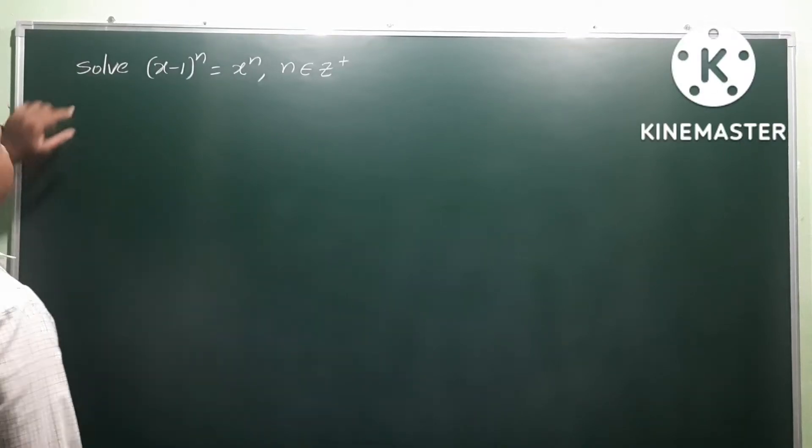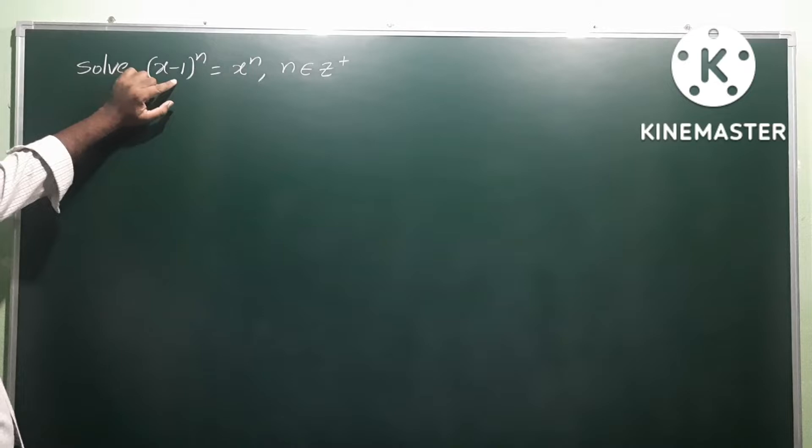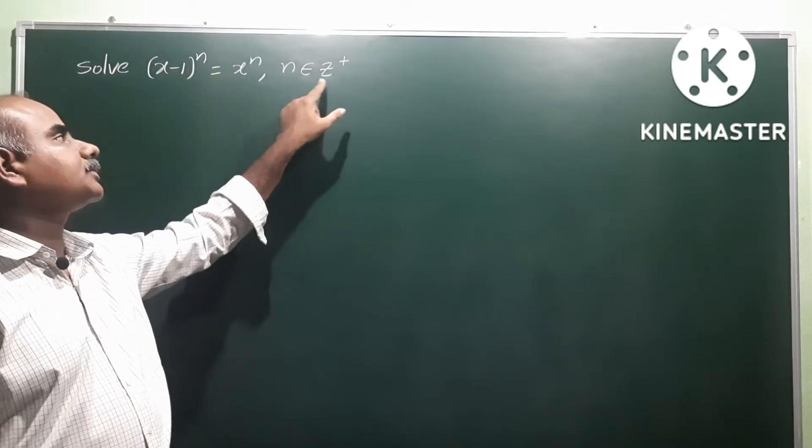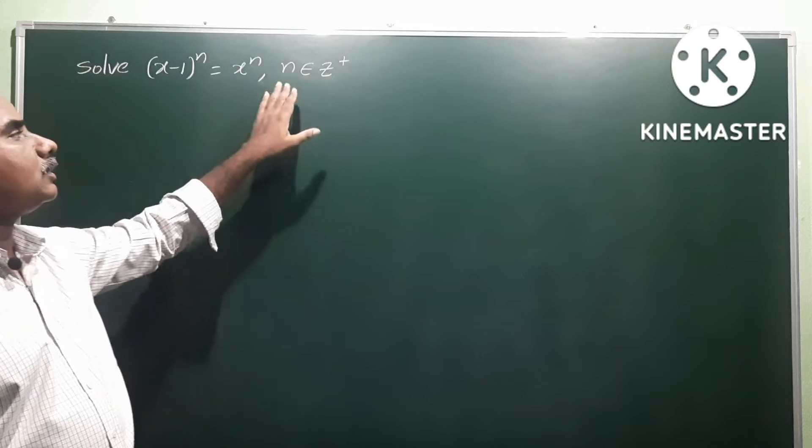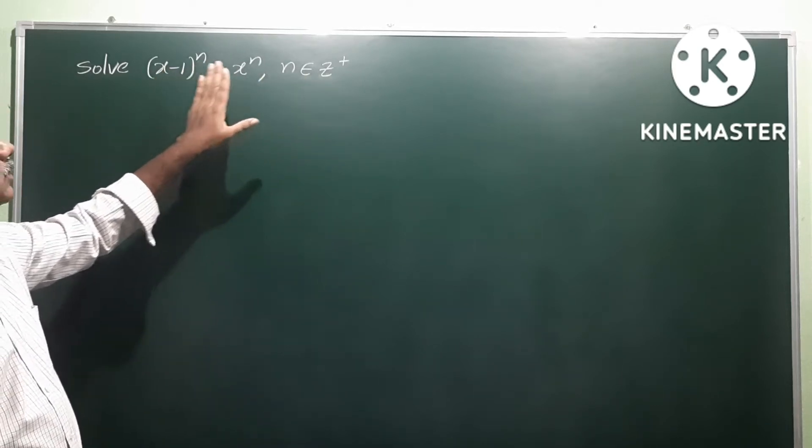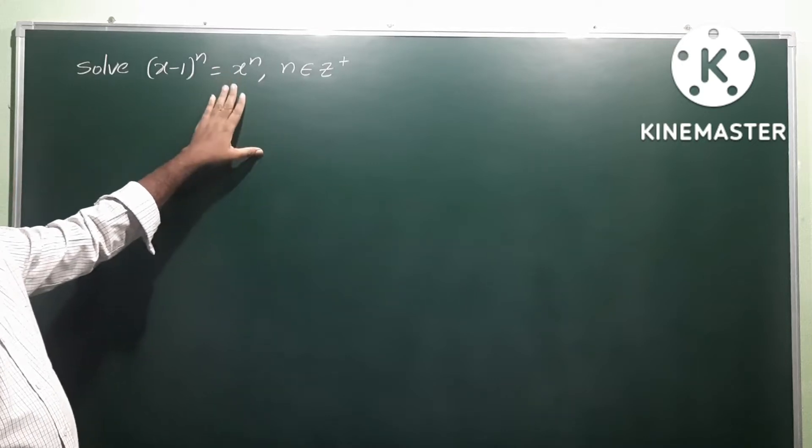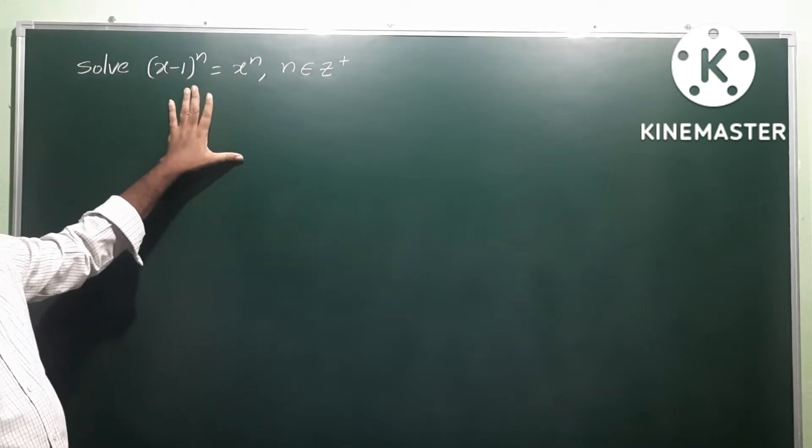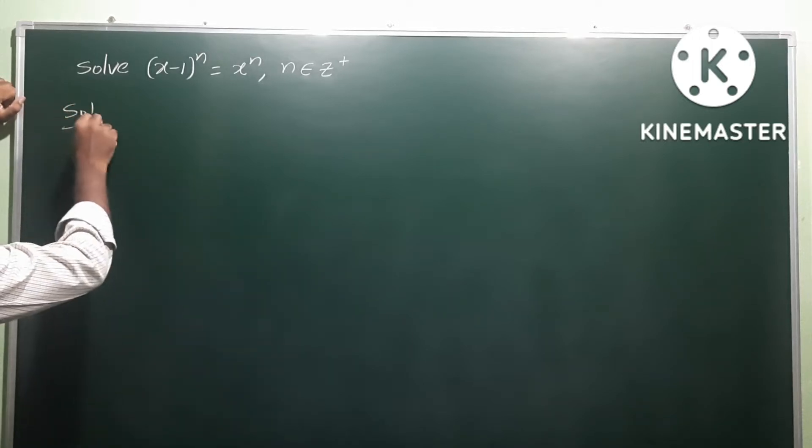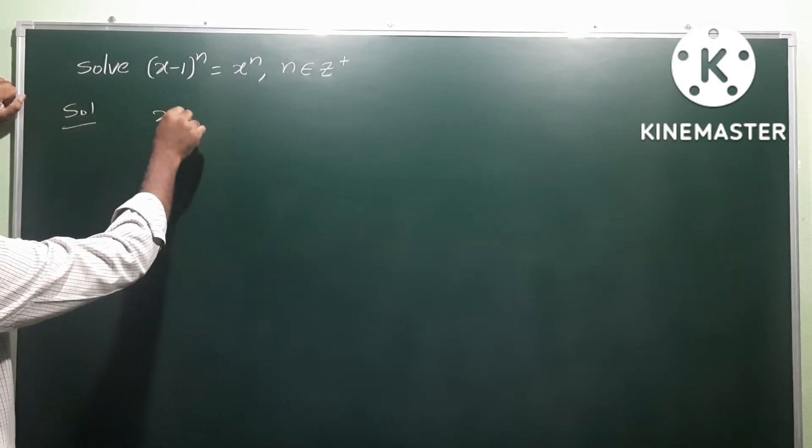Okay, next problem: solve (x-1)^n = x^n, n belongs to Z+. The equation says solve for the value, that means we have to find the value of x for this equation.